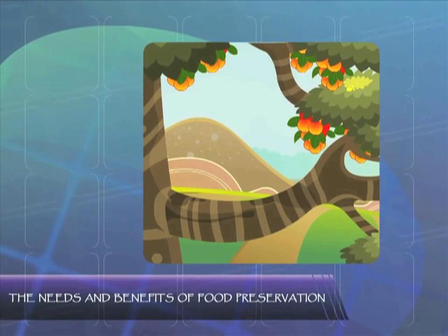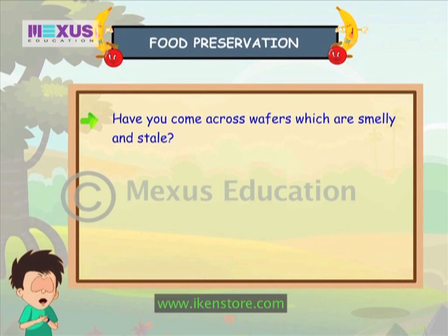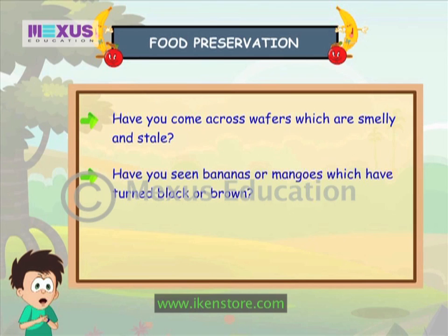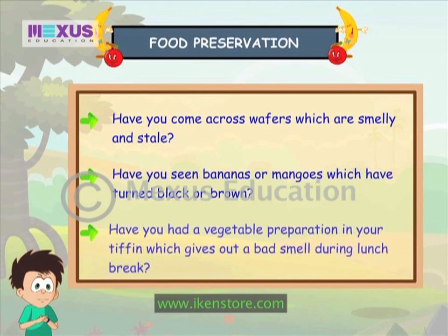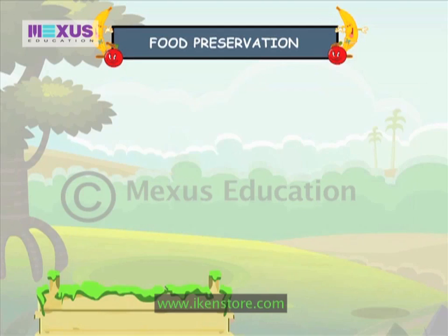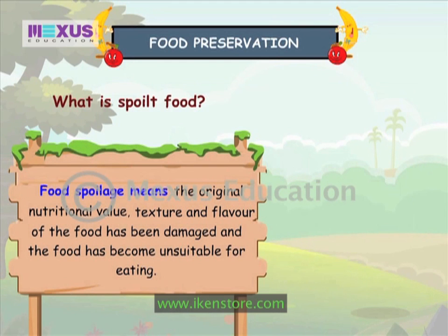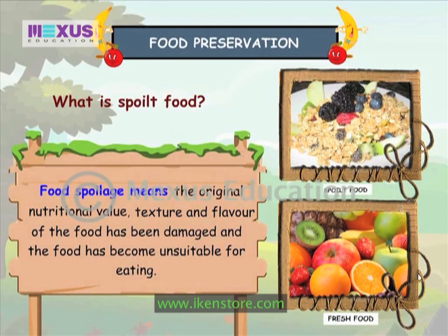The needs and benefits of food preservation. Have you come across wafers which are smelly and stale? Have you seen bananas or mangoes which have turned black or brown? Have you had a vegetable preparation in your tiffin which gives out a bad smell during lunch break? Food spoilage means the original nutritional value, texture and flavour of the food has been damaged and the food has become unsuitable for eating.